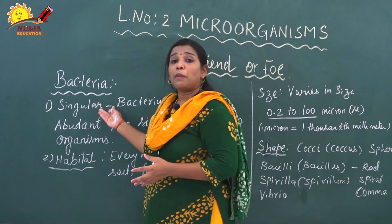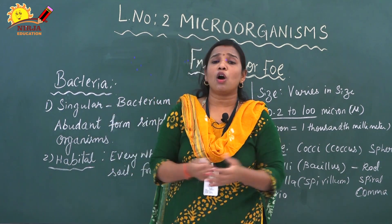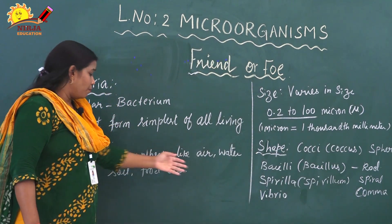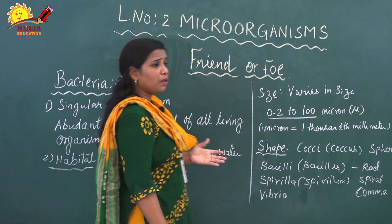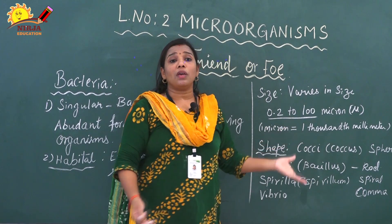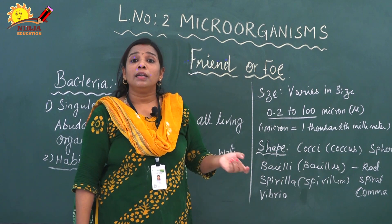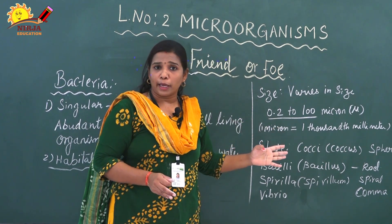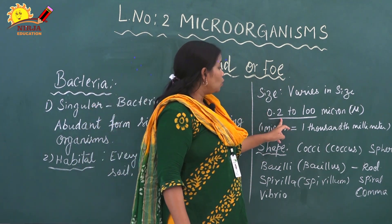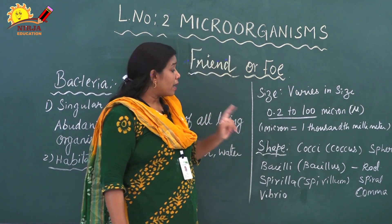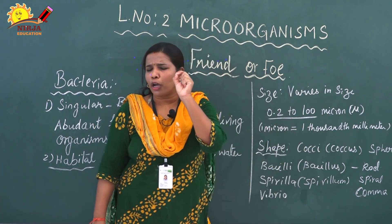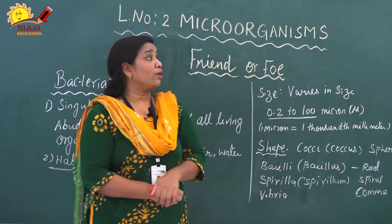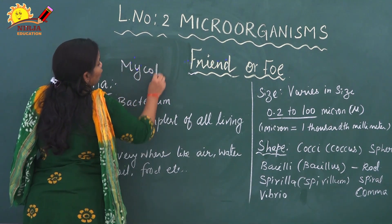Next, the habitat of bacteria. Bacteria live everywhere — in air, water, soil, food, etc. Regarding size, the size may vary. Some bacteria are very minute and must be seen under a microscope, while the majority — about 99% — are seen only under the microscope. The size ranges from 0.2 to 100 micrometers in diameter. One micron equals 1/1000 of a millimeter. The smallest bacteria is called mycoplasma.